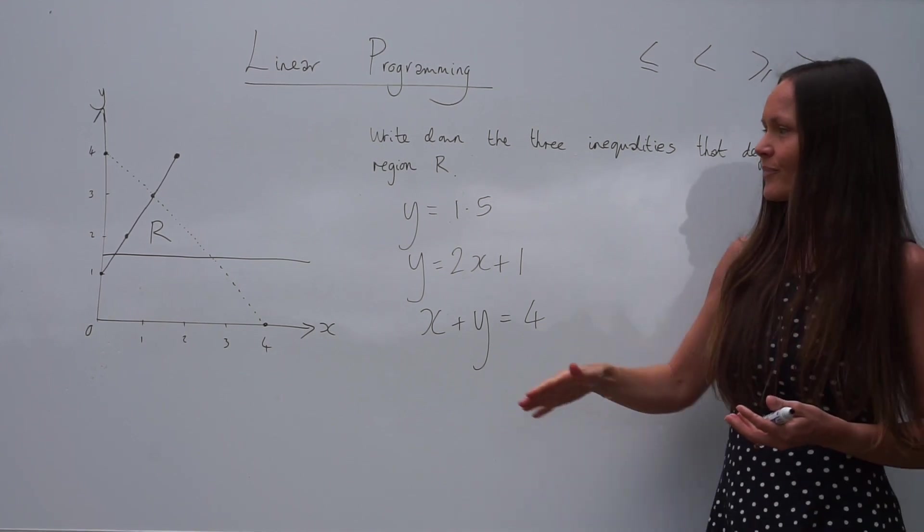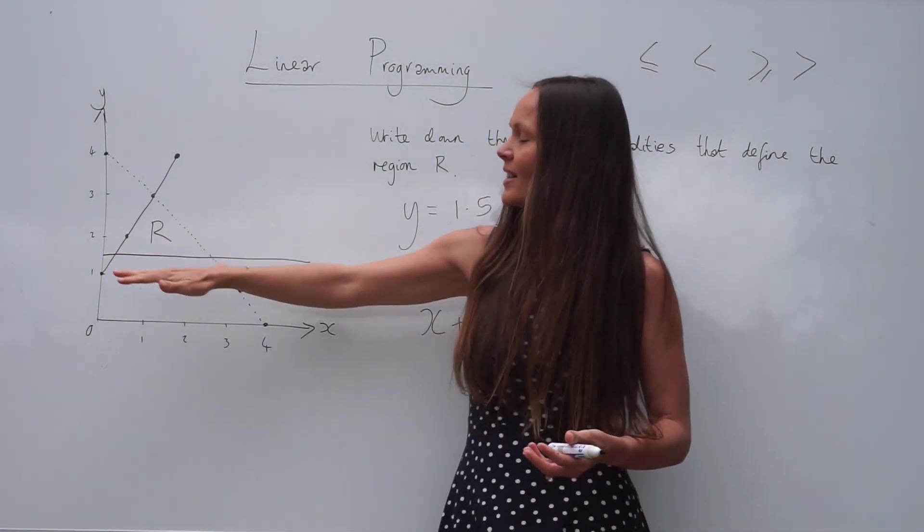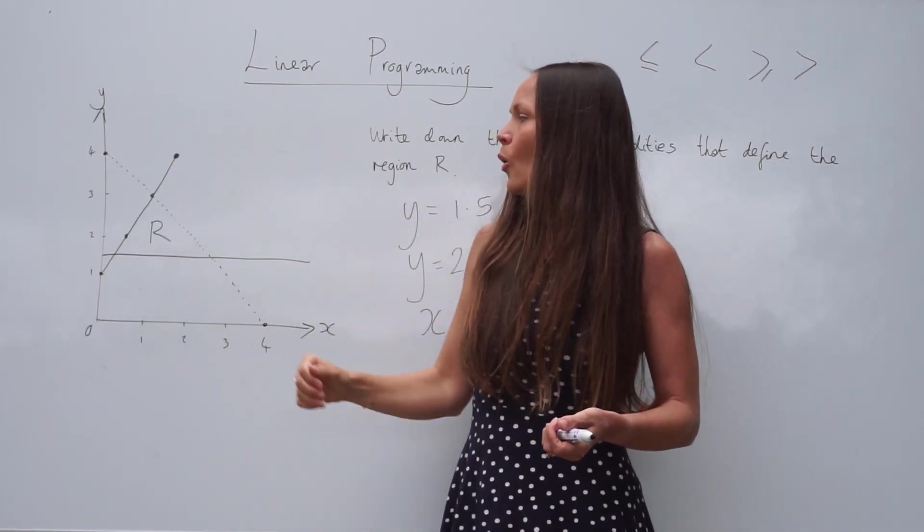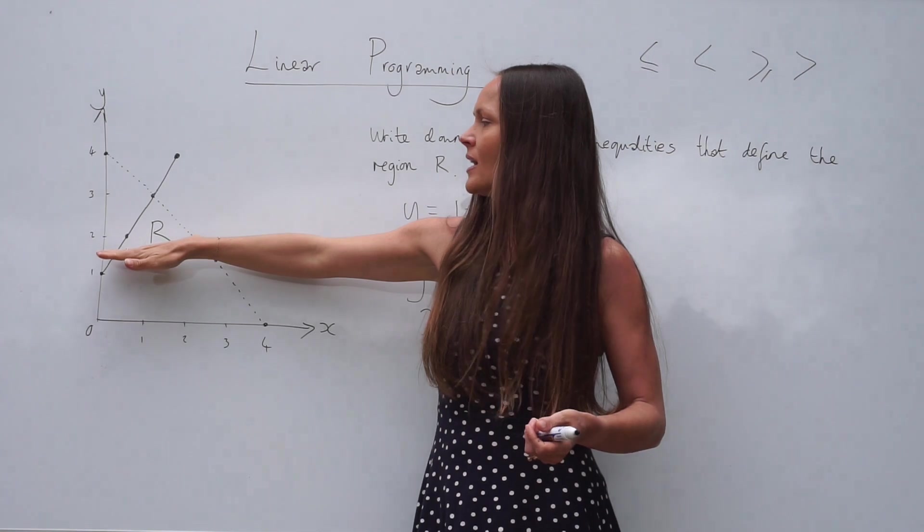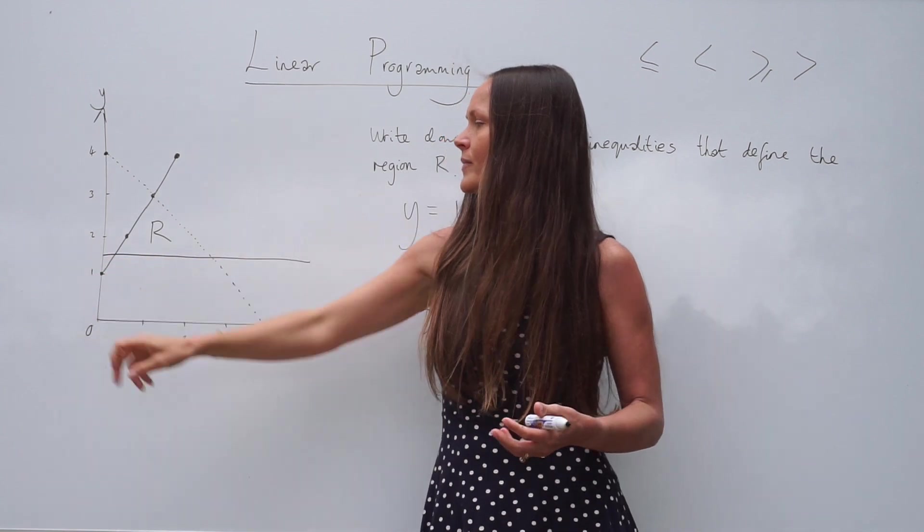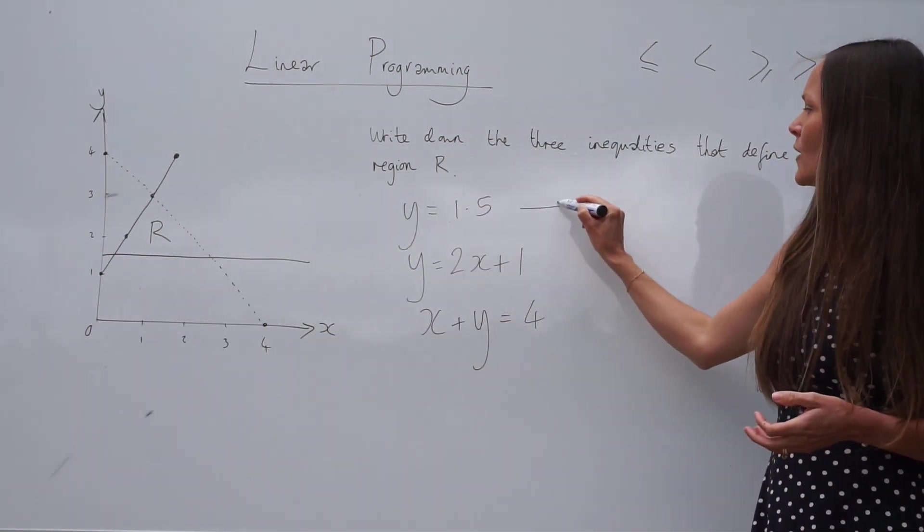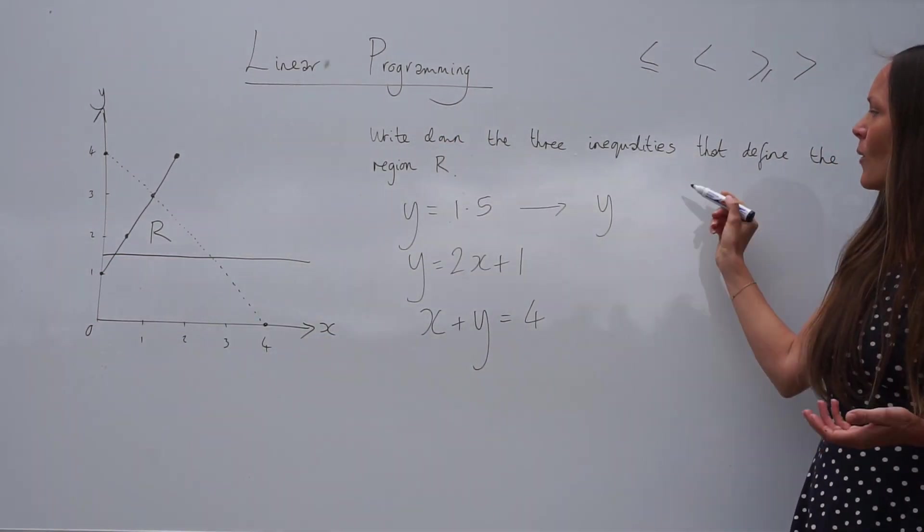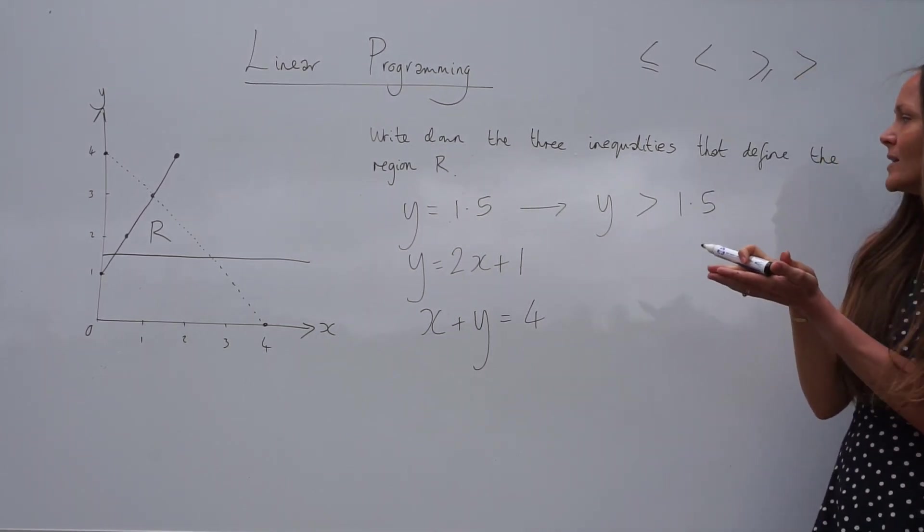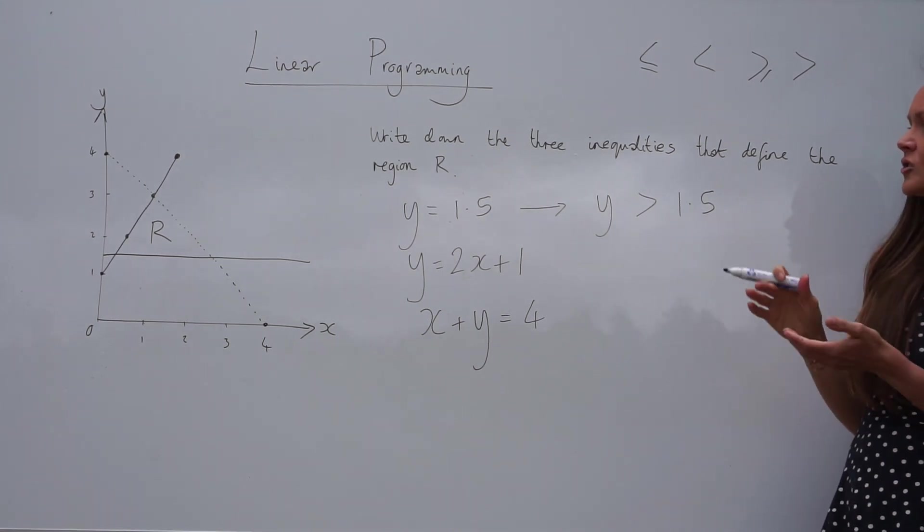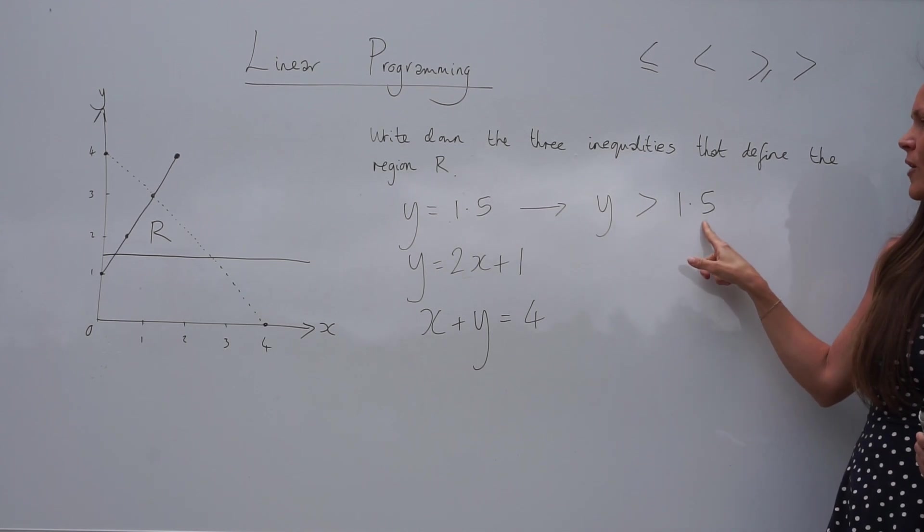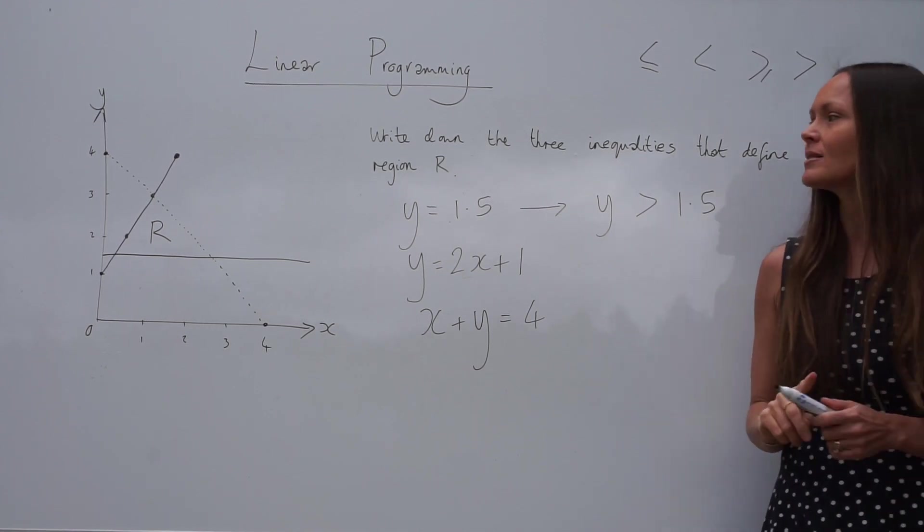Now, for the first one, this horizontal line here. Can you see the region R lies above that line? All the values of y above that line are greater than 1.5. So the inequality for the first one would be y is greater than 1.5. Remember, the inequality sign always opens at the larger number.